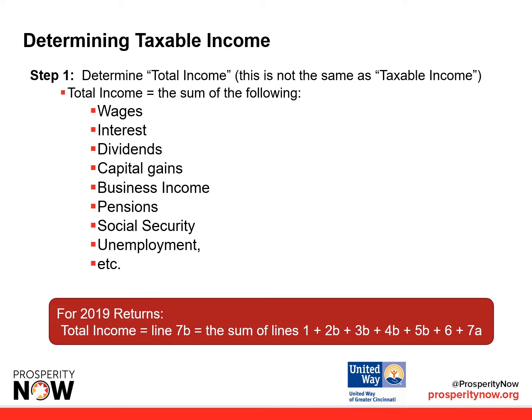For 2019 returns, the total income can be found on line 7B of Form 1040. That's the sum of lines 1, 2B, 3B, 4B, 5B, 6, and 7A.